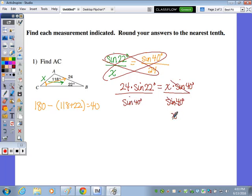Divide by the sine of 40 degrees. These cancel out, and we get X equals, now go ahead and do that calculation on your calculator. And I get 13.98682567. To the nearest tenth, that eight is going to bump that nine up to a zero. So AC is approximately 14.0.